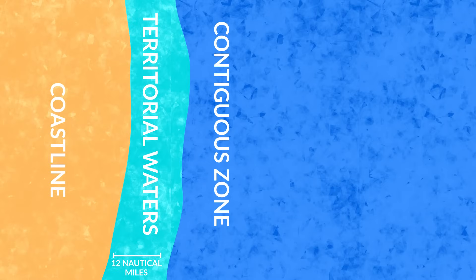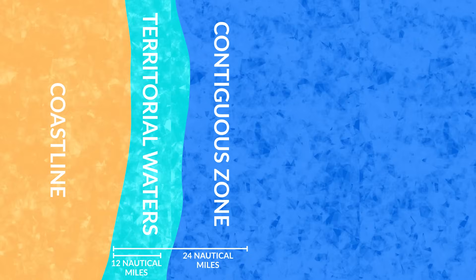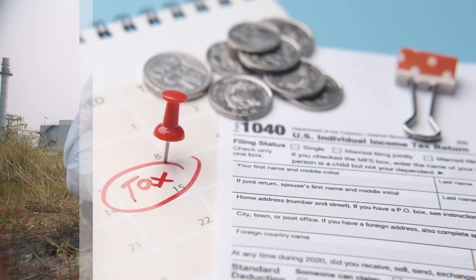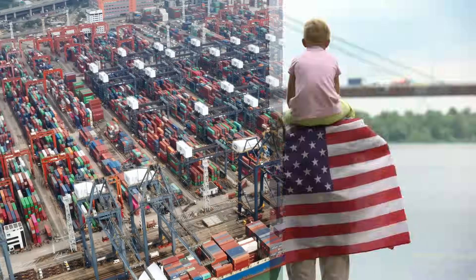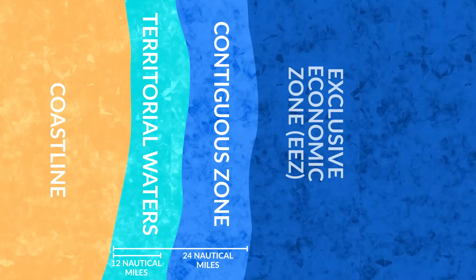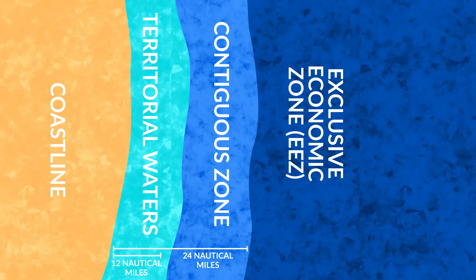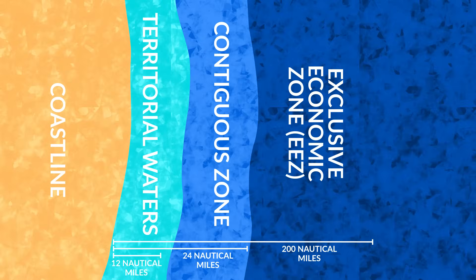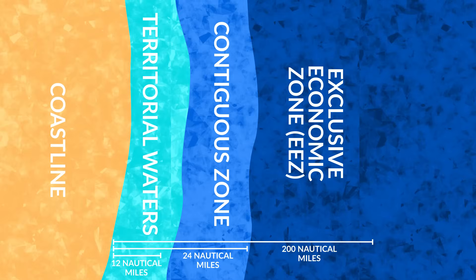The next zone is the contiguous zone, which is between 12 and 24 nautical miles from shore. Here, a state may enforce laws concerning pollution, taxation, customs, and immigration. Then the last zone is the exclusive economic zone, or EEZ, which extends between 24 and 200 nautical miles. States here have the sole right to the natural resources in this area, such as oil and fish.